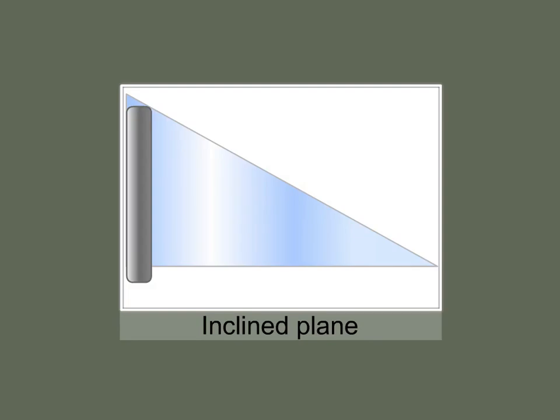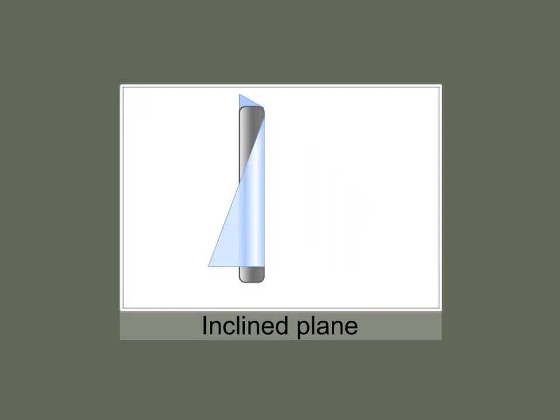Screw is actually an inclined plane wrapped around a pole. This activity will help you understand why screw is described as an inclined plane.